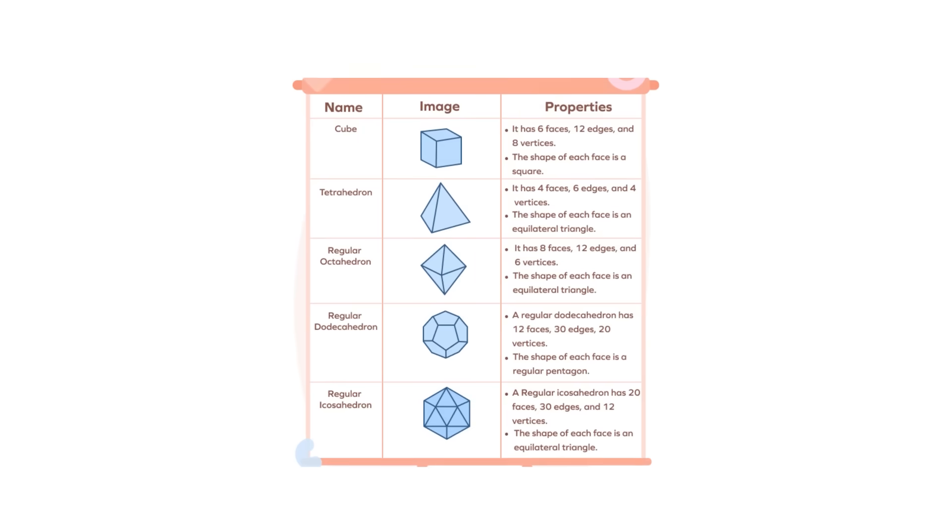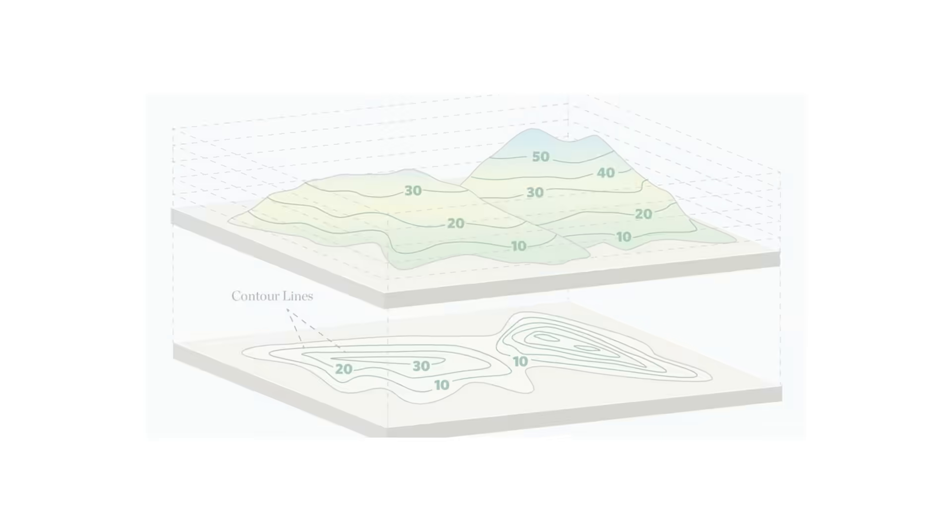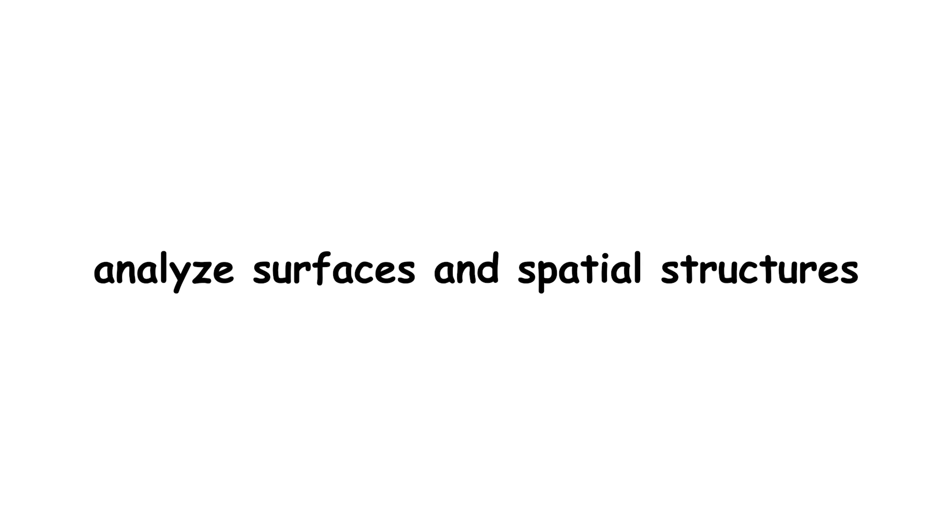1758: Euler's Formula for Polyhedrons. Euler's Polyhedron Formula connects the geometric properties of convex polyhedra, making their classification easier. It is also essential in topology, where it helps to analyze surfaces and spatial structures.